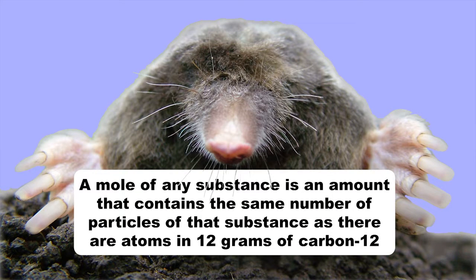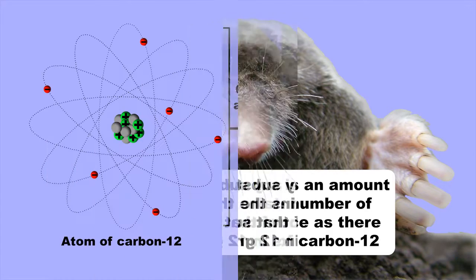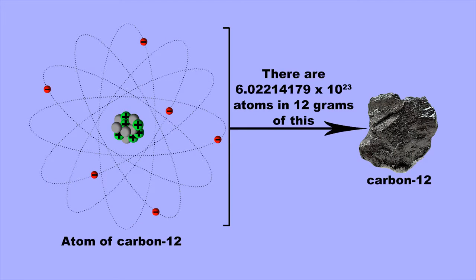If you have a mole of a substance, it means you have an amount that contains the same number of particles of that substance as there are carbon atoms in a sample of 12 grams of the carbon isotope carbon-12. It turns out that there are 6.02214179 times 10 to the power of 23 carbon atoms in 12 grams of carbon-12.